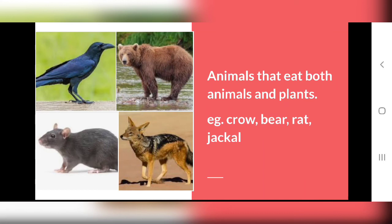The examples of omnivorous animals are crow, bear, rat and jackdaw. Human beings are also omnivorous animals. Because some of us are vegetarians and some are non-vegetarians, but still we also eat animal products like milk, butter and ghee — those are also animal products, food we get from animals. So human beings are also omnivorous animals.